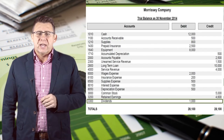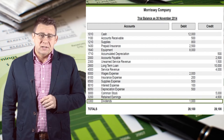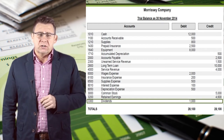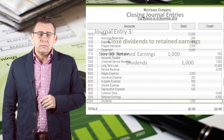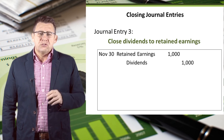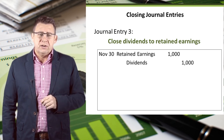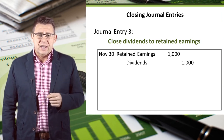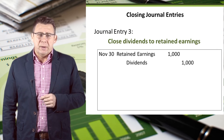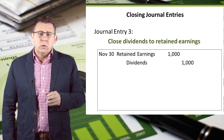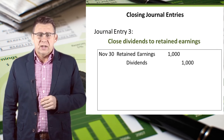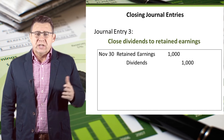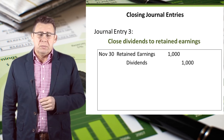The final temporary account is dividends, which has a debit balance of $1,000. The third journal entry is to close dividends to retained earnings. Since dividends have a $1,000 debit balance, we will credit dividends to make the balance zero. Retained earnings will then be debited.